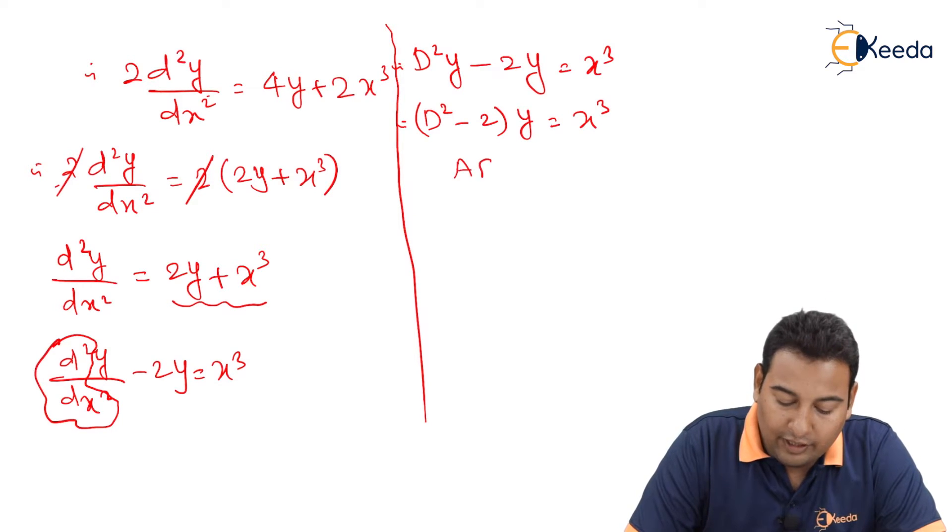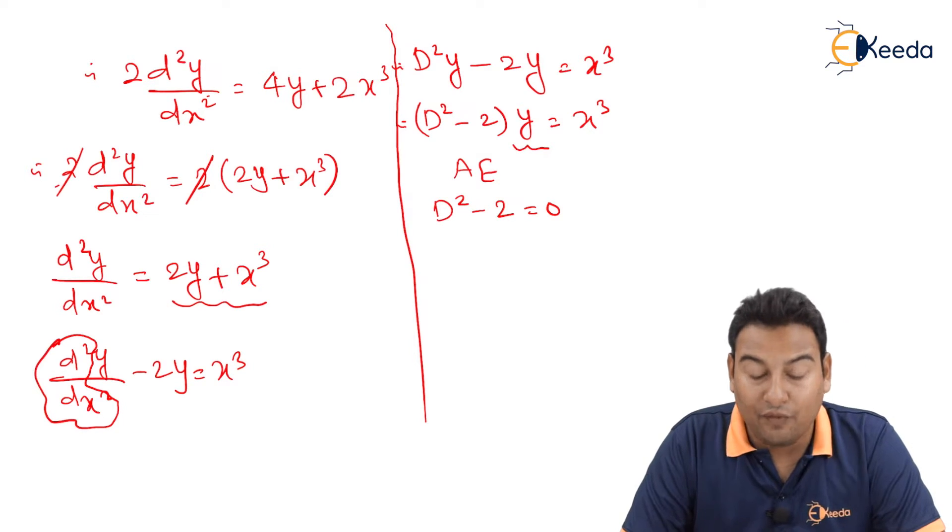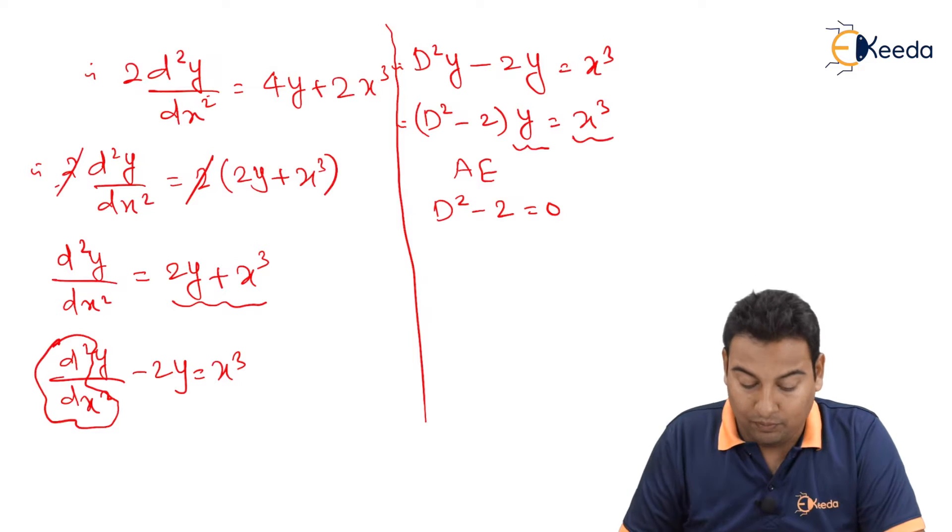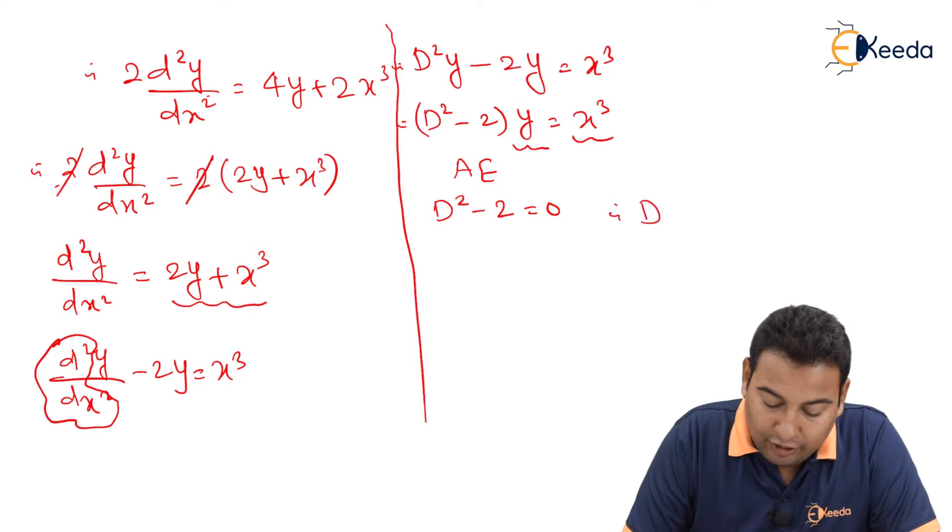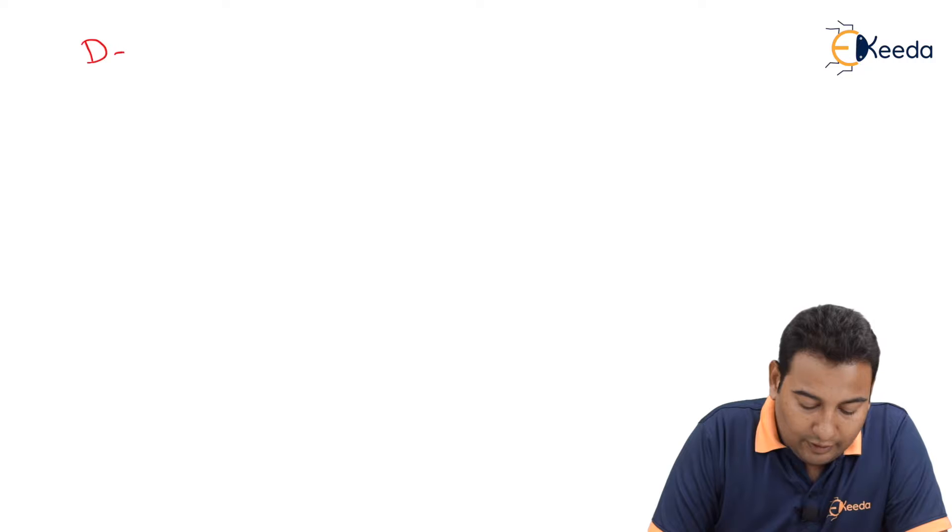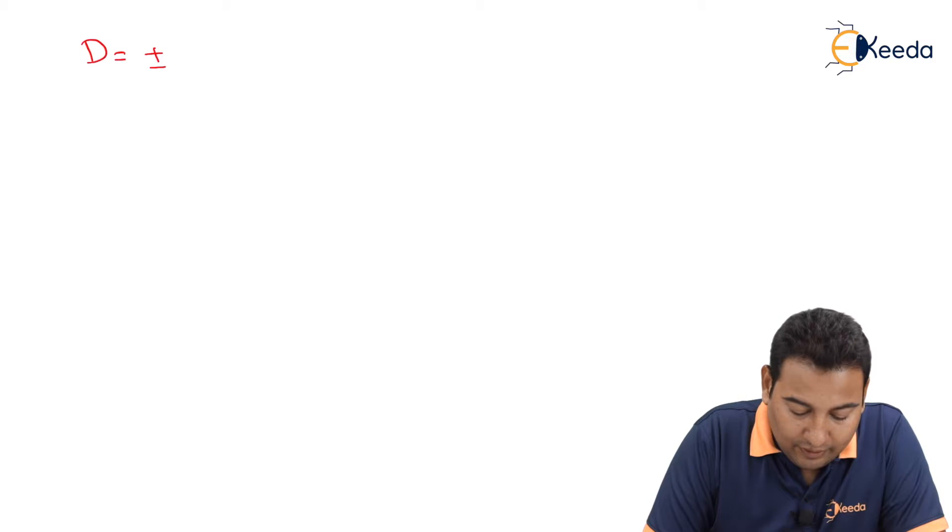What is the auxiliary equation here? D² minus 2 equal to 0, because in auxiliary equation we don't take this y and this x cube. Therefore D² is equal to 2, D is equal to plus minus √2.